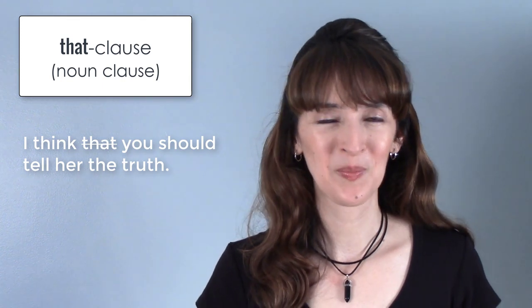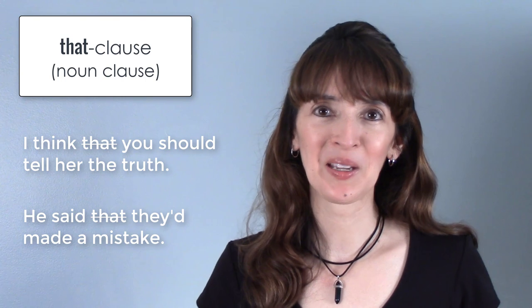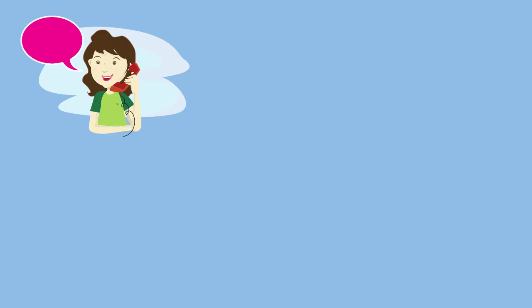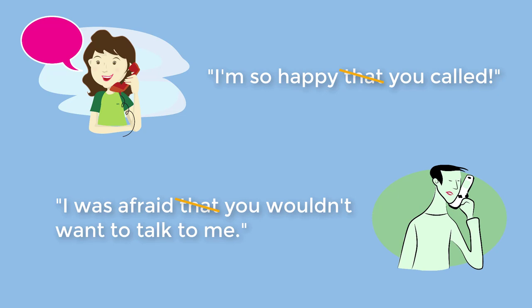Let's talk for a moment about the word 'that.' It has different uses. When can we omit it? When 'that' is part of a noun clause and the noun clause functions as the object of a verb: 'I think you should tell her the truth.' 'He said they'd made a mistake.' Here are two more 'that' clauses: 'I'm so happy you called.' 'I was afraid you wouldn't want to talk to me.' These noun clauses follow an adjective — they're adjective complements — and again, we can drop the word 'that.' The sentences still make sense.